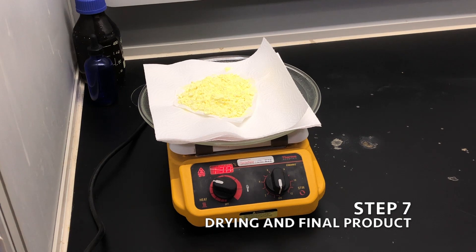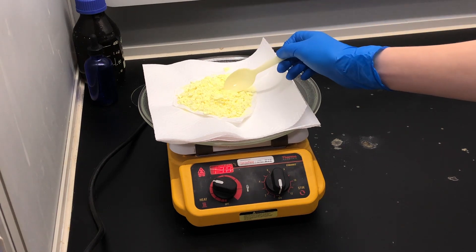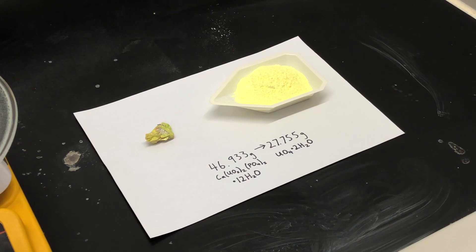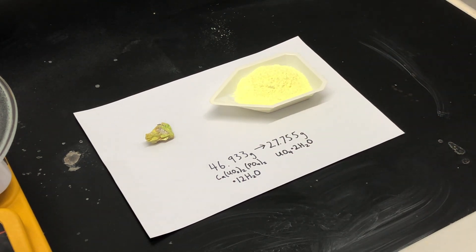After allowing the slurry to dry overnight on a heated plate, this is the result. A nice fine light yellow powder. Therefore, through a relatively straightforward process, we were able to convert a naturally occurring uranium material into a chemically pure uranium containing compound that can be used for further experiments or be used for other projects such as uranotype printing.